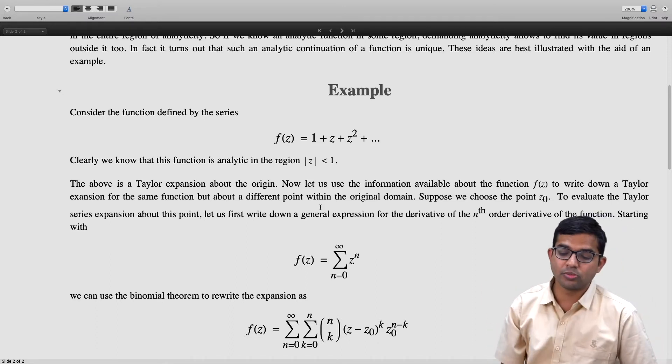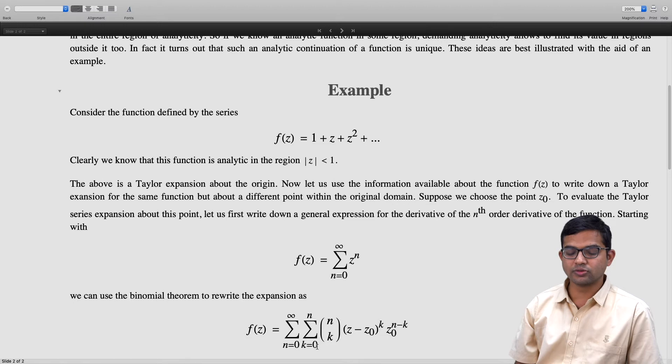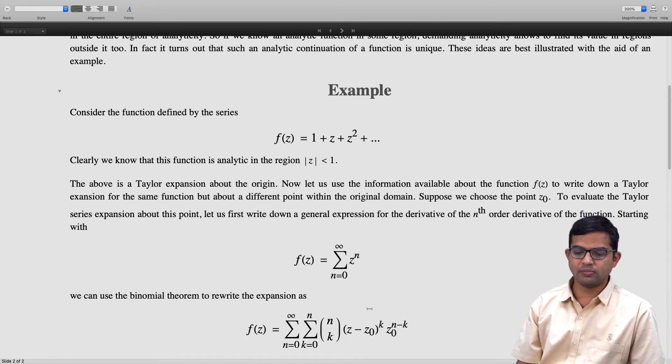That's going to be basically a binomial expansion where k goes from 0 to n, and n choose k times (z - z₀)^k times z₀^(n-k). This is just simply writing z^n as (z - z₀ + z₀)^n and then using the binomial expansion.